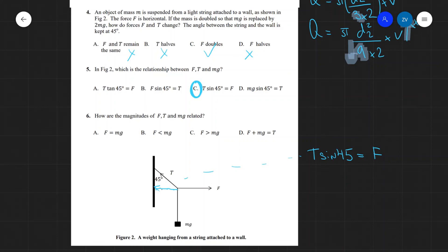And the last one, how are the magnitudes of F, T and mg related? We have F is equal to mg, F is smaller than mg, F is larger, F plus mg is equal to T. Okay, well, F will definitely have to be equal to mg. So, the correct answer is A. The reason for that is because this angle here is kept at 45 degrees, which turns out to be the key statement. So, unless the angle is not 45 degrees, the forces F and mg will have to be equal to essentially balance out that angle. So, the correct answer is A.